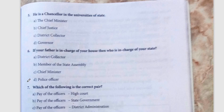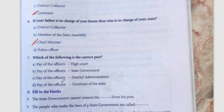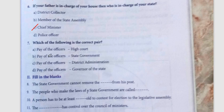Fifth question: he is the Chancellor of the Universities of the State — the answer is the Governor. Next, if your father is in charge of your house, then who is in charge of your state? The Chief Minister. Next, which of the following is the correct pair? Who pays the officers? The answer is the Governor of the State. Option D.